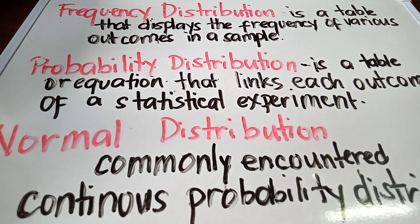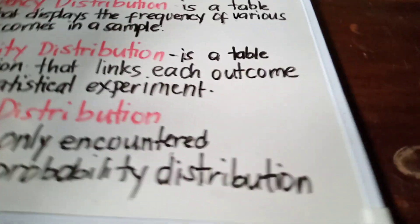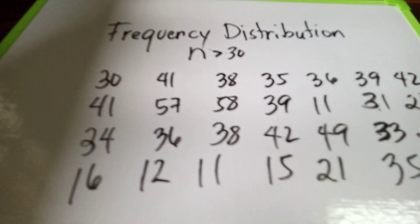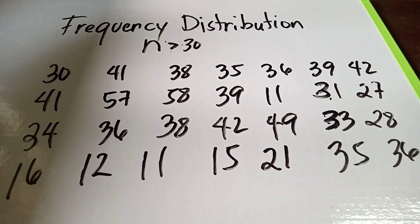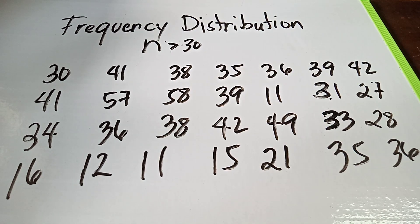Okay, so number one, let's find out what is a frequency distribution. If I have this one, if I have my frequency, if the total of n is greater than 30, we will use frequency distribution.